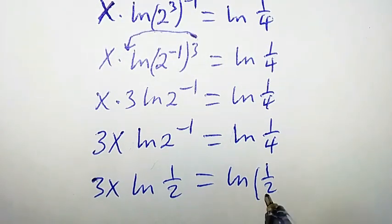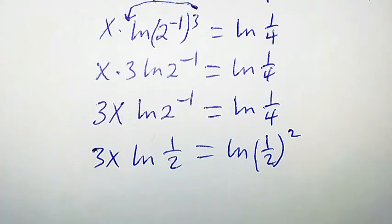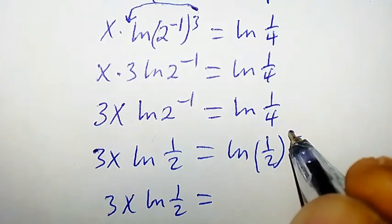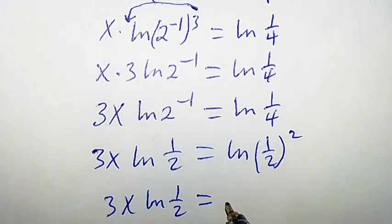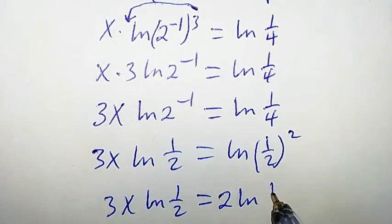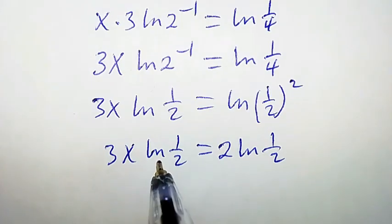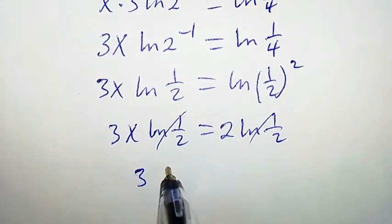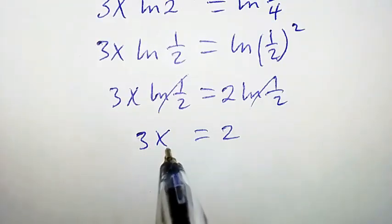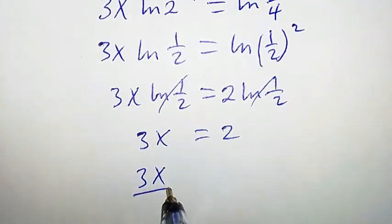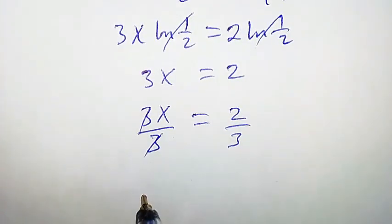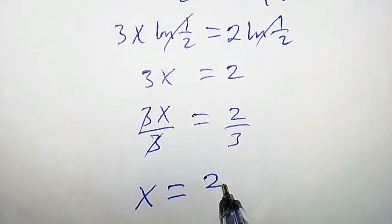Since 1/4 equals 1/2 times 1/2, we can write ln(1/4) as 2 times ln(1/2). So 3x times ln(1/2) equals 2 times ln(1/2). Dividing both sides by ln(1/2), those terms cancel, leaving 3x equal to 2. Dividing both sides by 3, we get x equal to 2 over 3. This is the second solution.